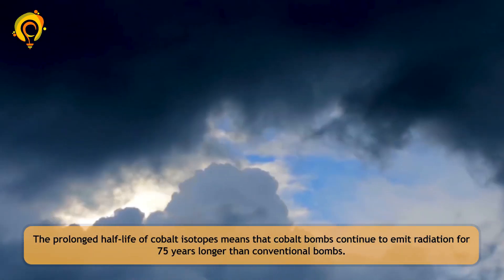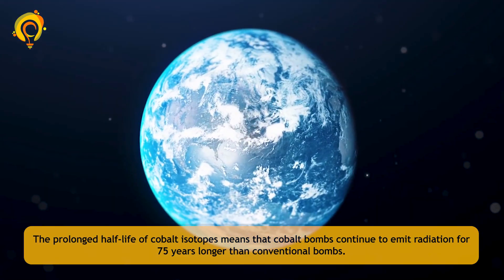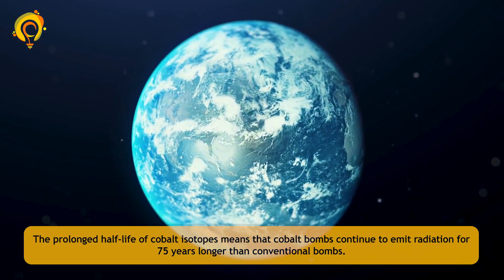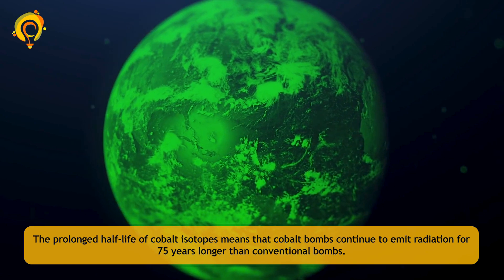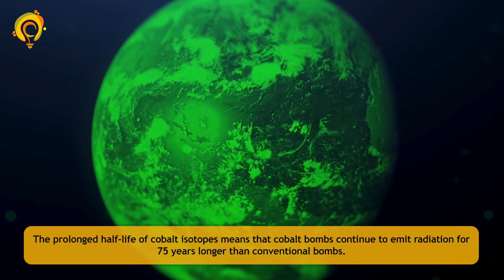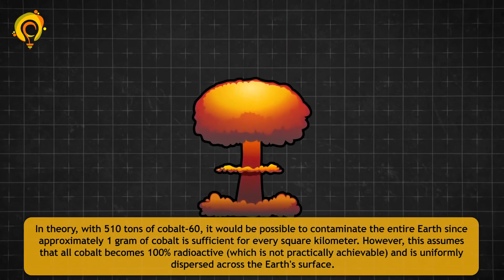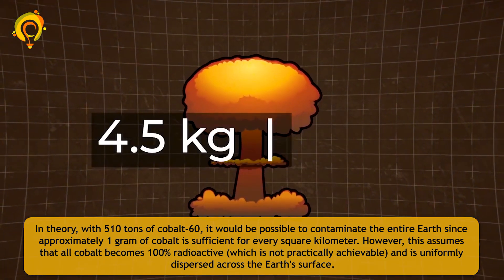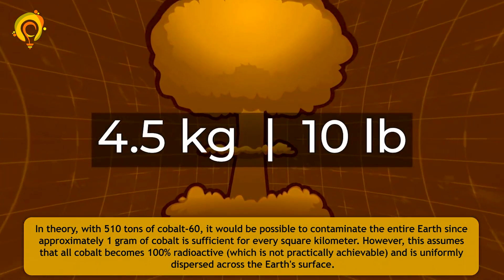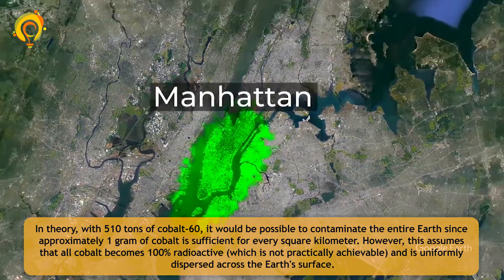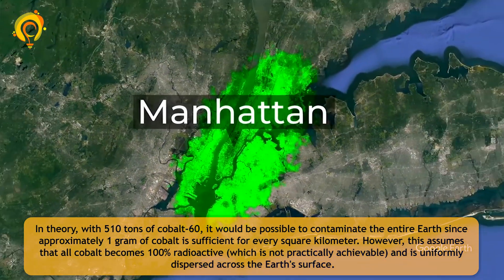The prolonged half-life of cobalt isotopes means that cobalt bombs continue to emit radiation for 75 years longer than conventional bombs. In theory, with 510 tons of cobalt-60, it would be possible to contaminate the entire Earth, since approximately one gram of cobalt is sufficient for every square kilometer.